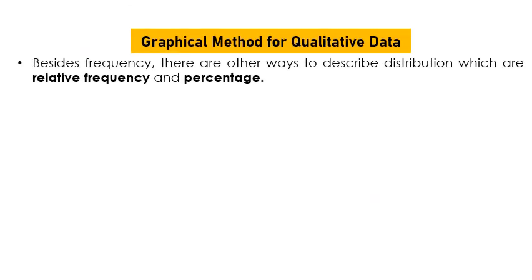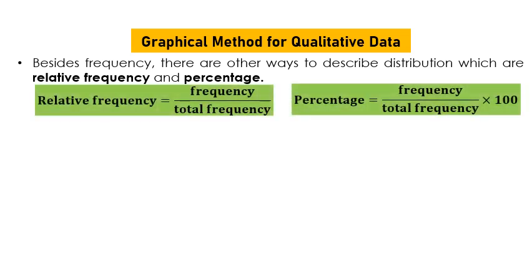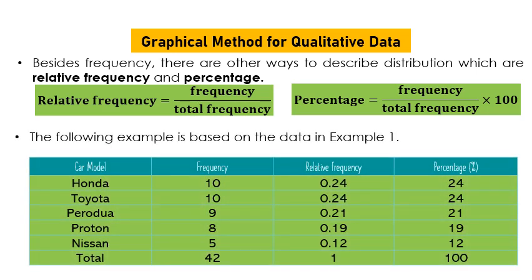Besides frequency, there are other ways to describe a distribution: relative frequency and percentage. Relative frequency equals frequency over total frequency; percentage equals relative frequency times 100. For example, 10 over 42 gives 0.24, and times 100 gives 24 percent.